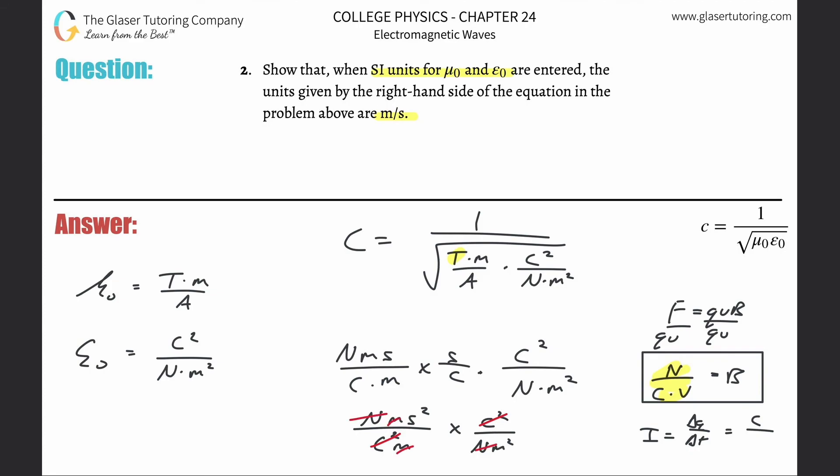We start noticing that the coulombs squared will cancel, these meters will cancel, the newtons will cancel. What we're basically left with now is second squared over meter squared. So that's what this whole thing on the bottom comes out to be.